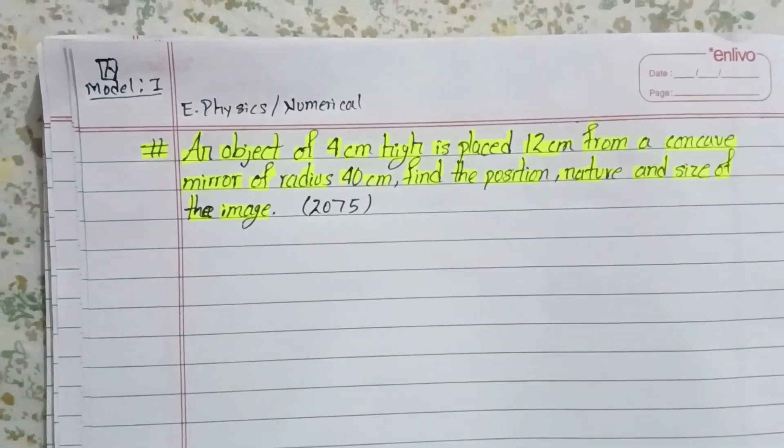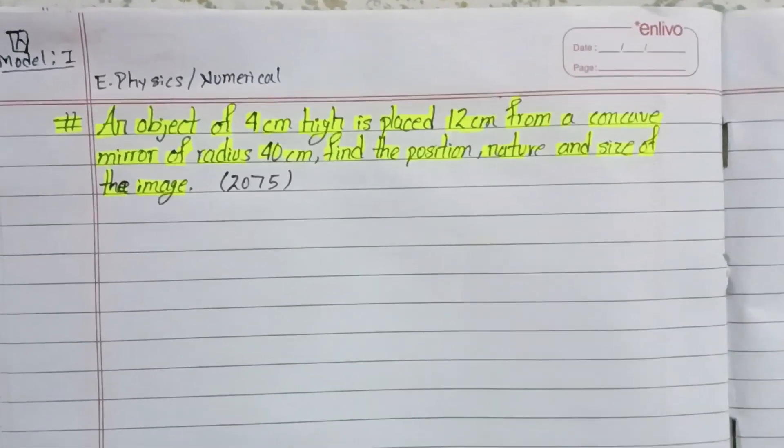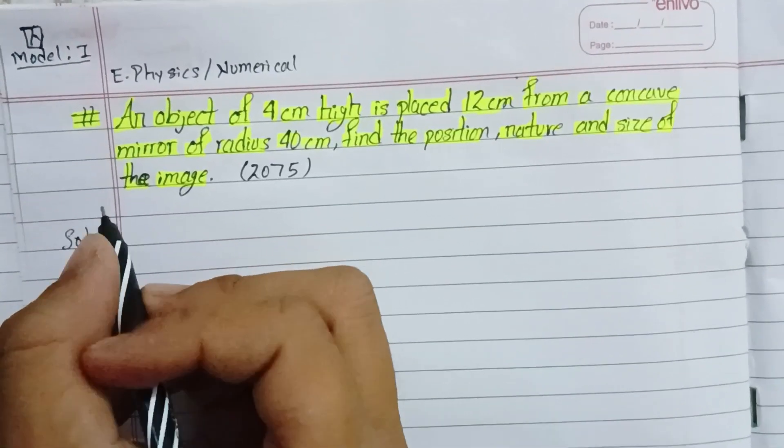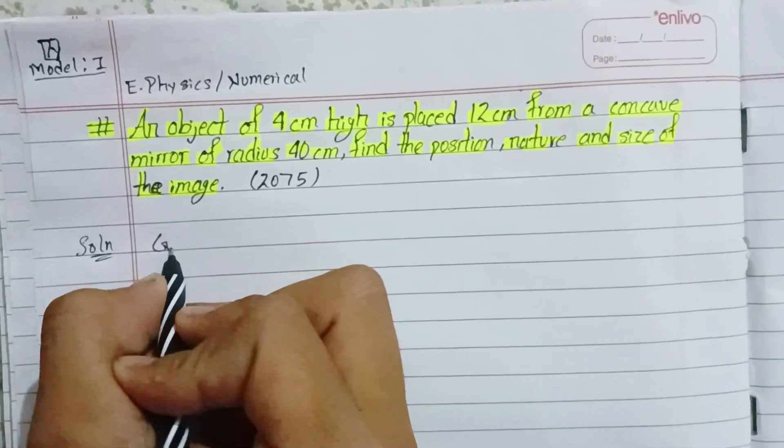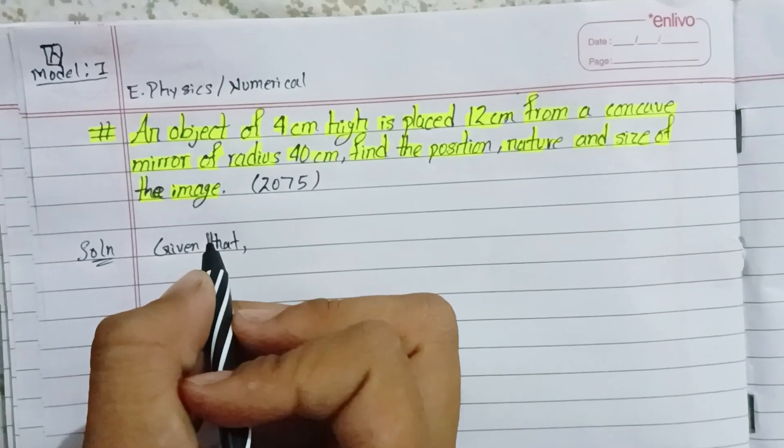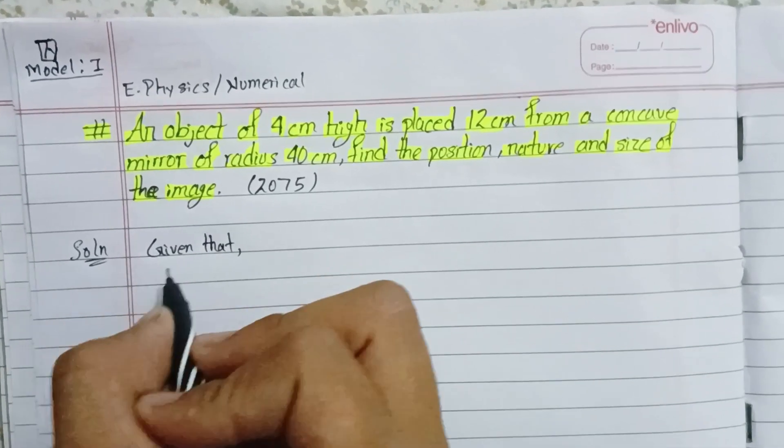Let me write the solution. Given that: height of object, which I'll denote as O, equals 4 cm.